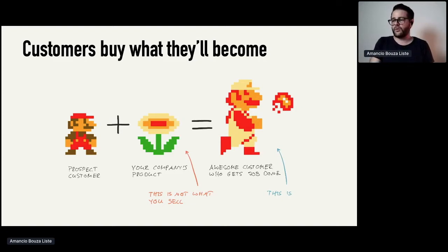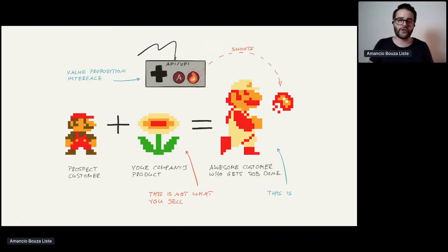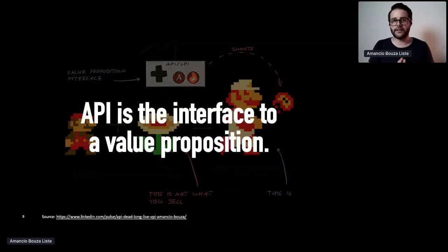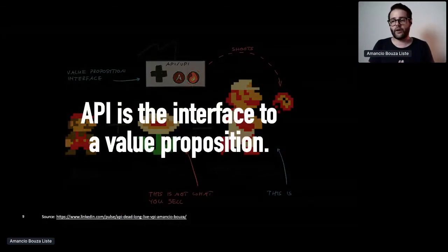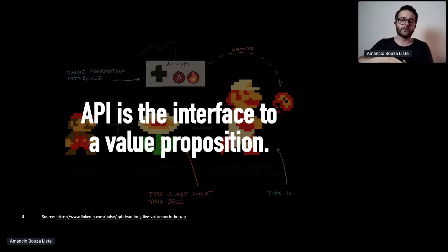What's the API in this game? The API — and this is a really important idea — is really the interface to access this value proposition. It's the interface to shoot the fireballs at enemies. And that's a fundamental idea for API products. The API is not the interface to a backend or about exposing backends — it's really the interface to a value proposition.